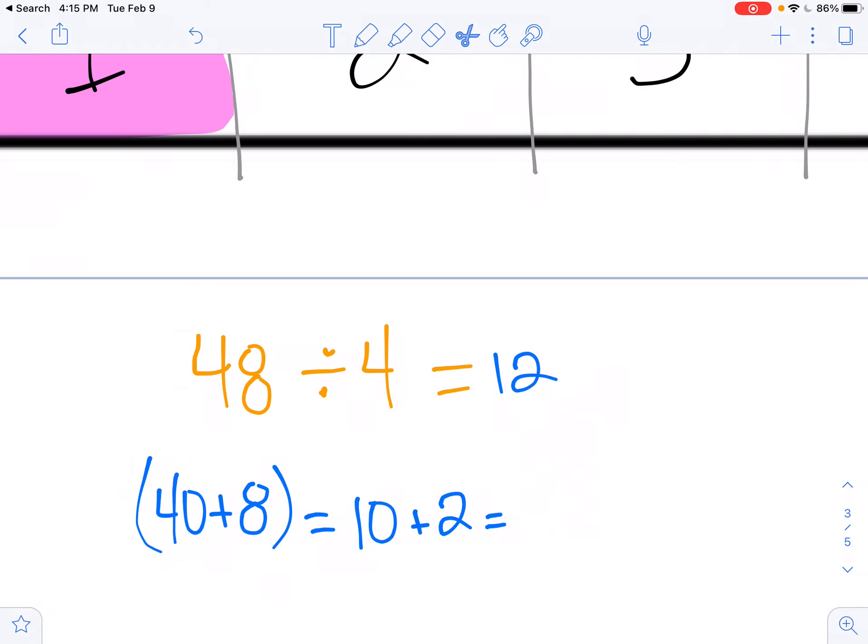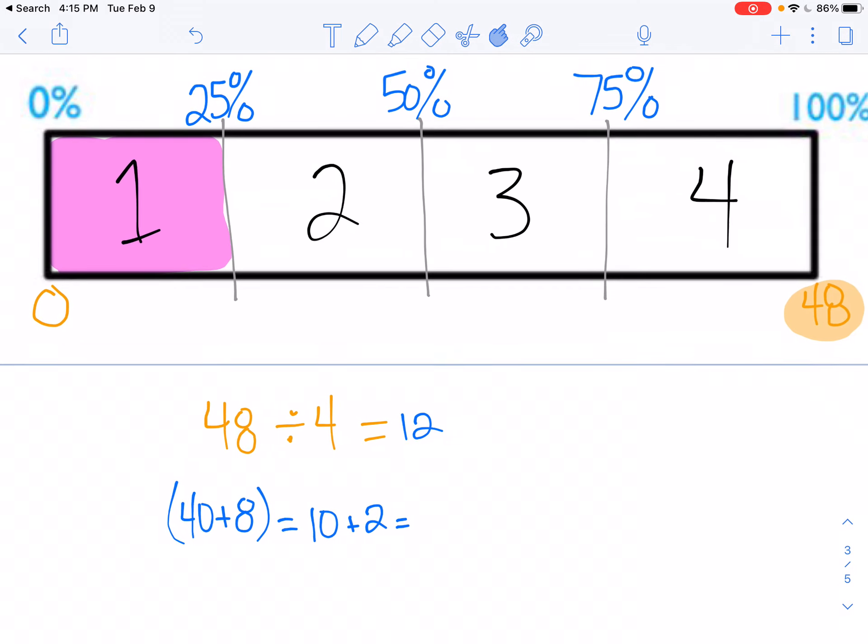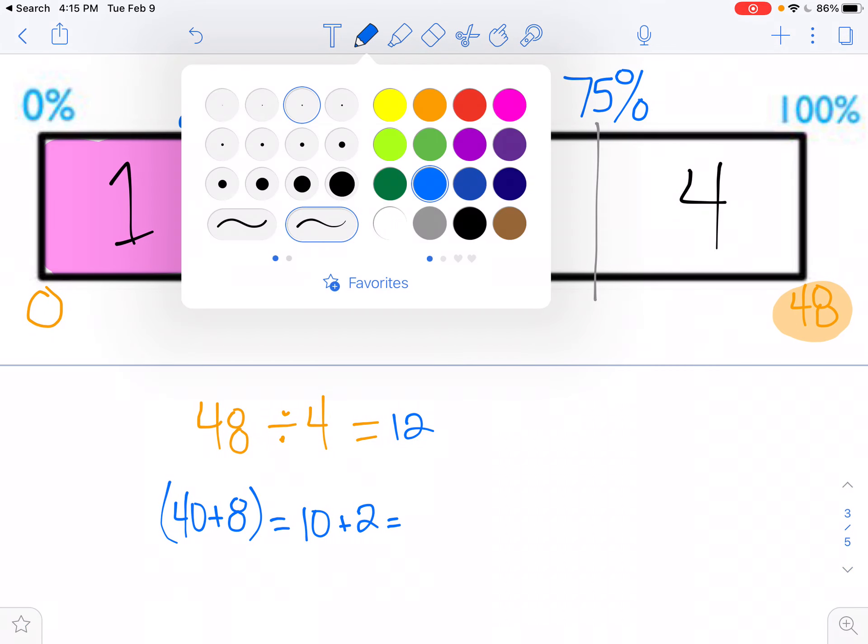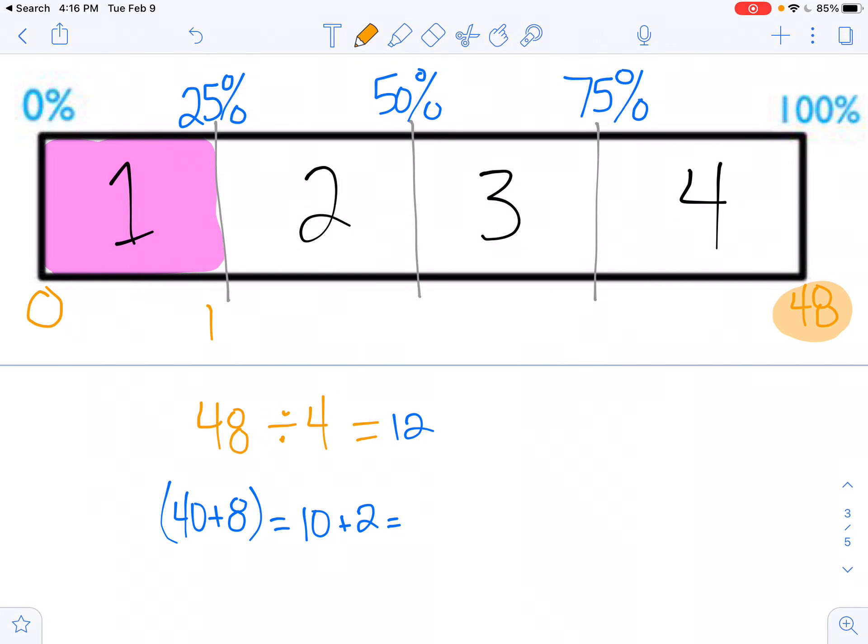So that means the answer to this problem is 12. This is my count by number on the bottom. So I'm counting by a dozen. Add 10, add 2. So I have 12. Add 10 is 22 plus 2 is 24. Add 10 is 34 plus 2 is 36. Add 10 is 46 plus 2 is 48. So this pattern works on the bottom as well.